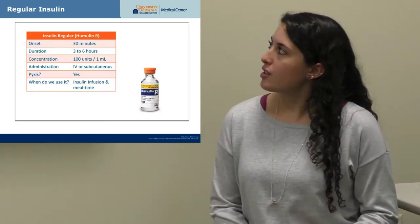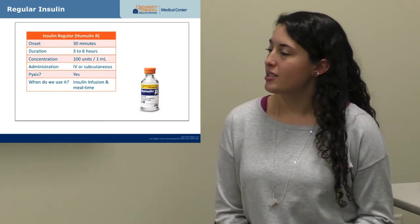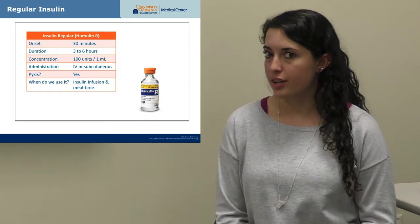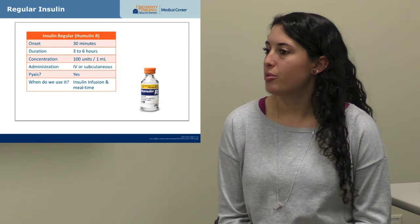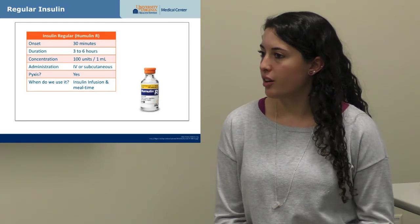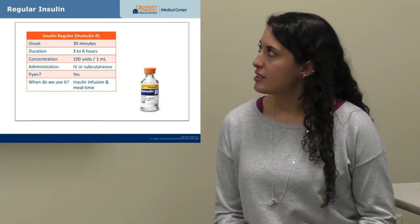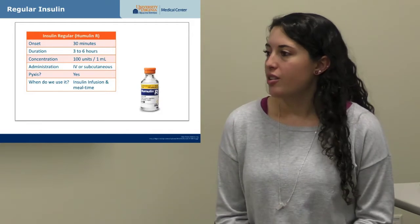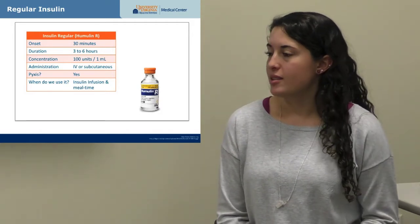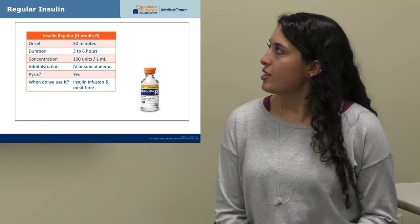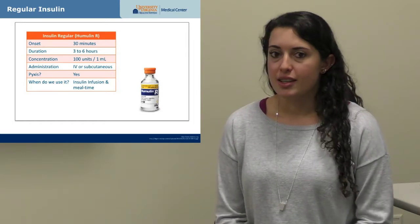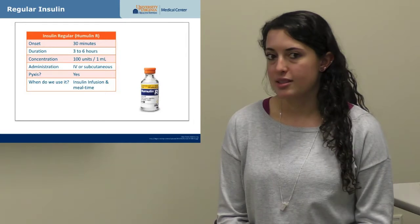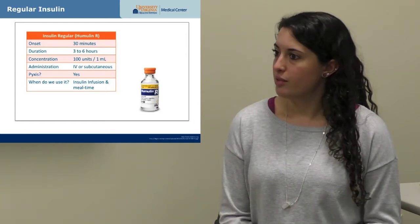The next type is still short-acting — regular insulin — which takes about 30 minutes to start working and lasts about three to six hours, a little bit longer than lispro. This is also 100 units per mL and kept in the Pyxis. This is the type used for insulin infusions, and it can also be used for mealtime insulin just as lispro can.